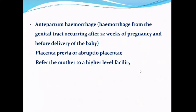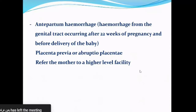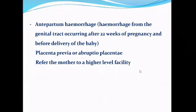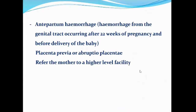Antepartum hemorrhage is vaginal bleeding that occurs after 22 weeks of pregnancy and before delivery of the baby. The most common causes of antepartum hemorrhage are placenta previa and abruptio placenta. Any bleeding before delivery is considered very dangerous, and the mother should be referred urgently to a hospital with blood transfusion facilities.